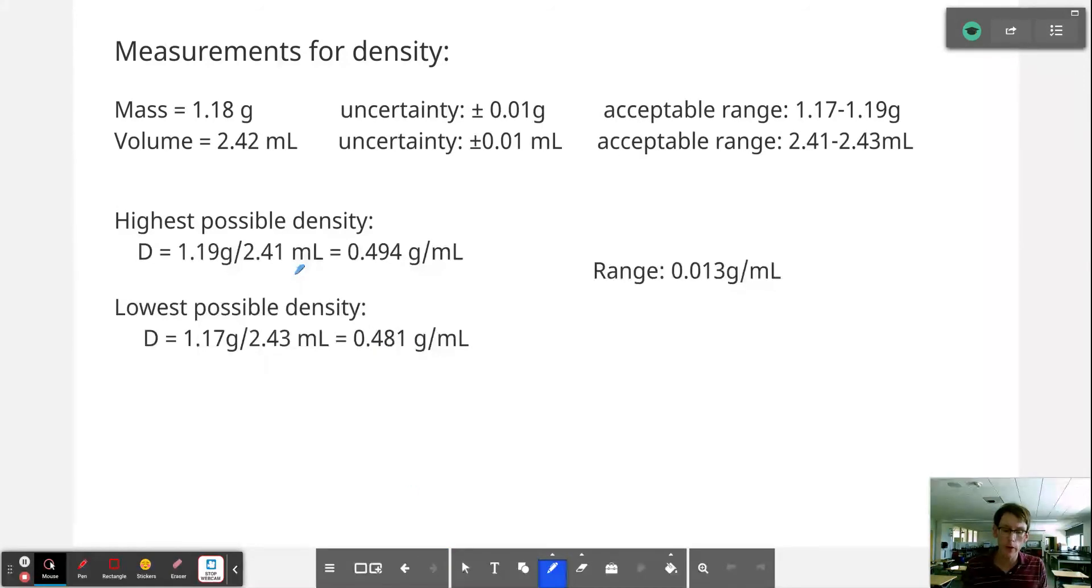So let's say though that we change the instruments that we use and we end up using a balance that's precise to the hundredth of a decimal, where that hundredth of a gram is what we could have a little bit of deviation in.